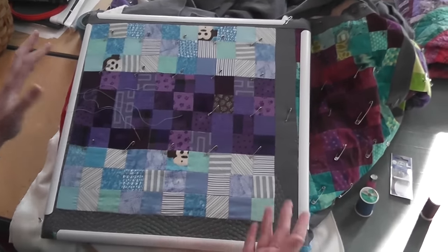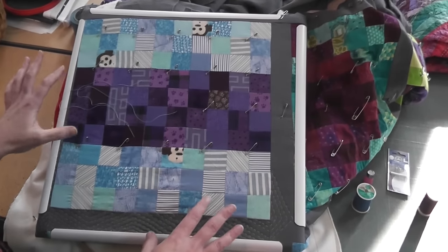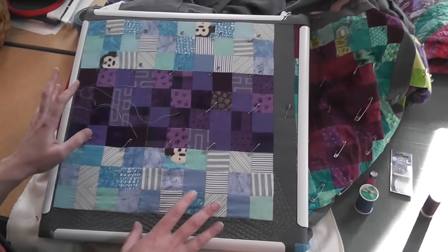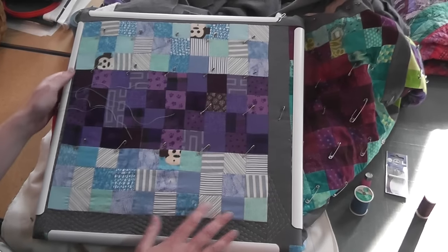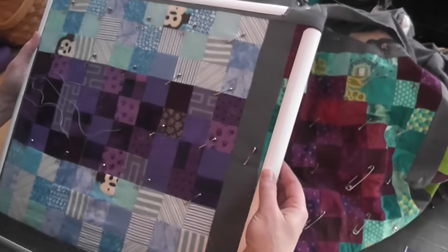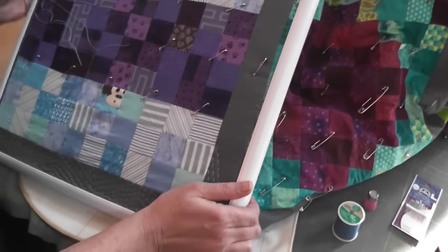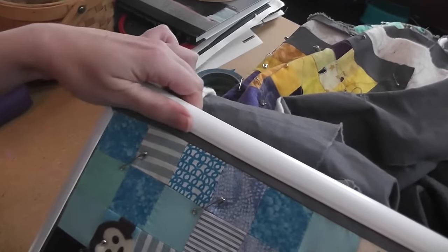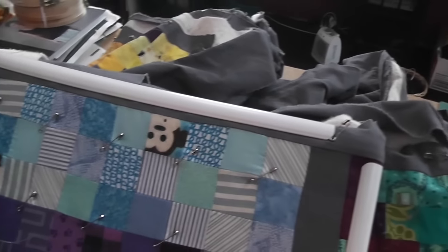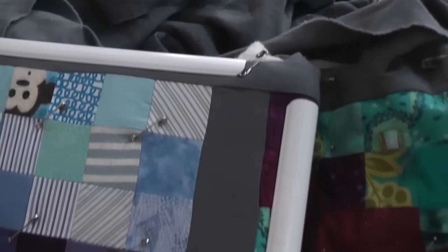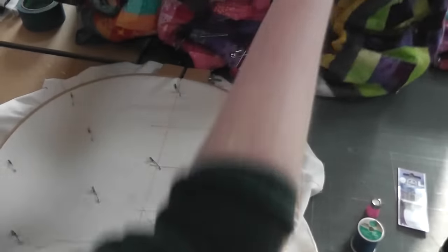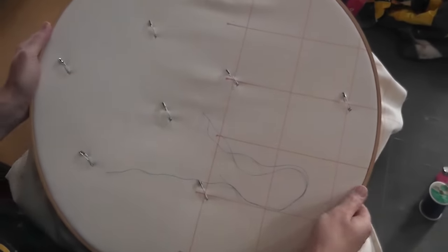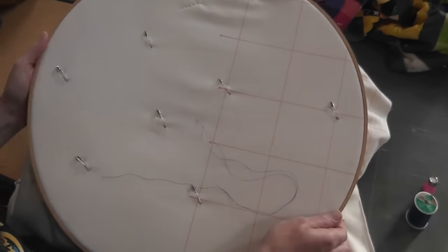This is called a Q-snap frame and it's a little bit harder to find so I've got a link in the blog post that goes with this that shows you where you can buy it. This is a plexiglass frame or a PVC frame and then these things just snap on and off and really hold the quilt very tightly and nice. But I'm going to show you the rest of what you need for this.